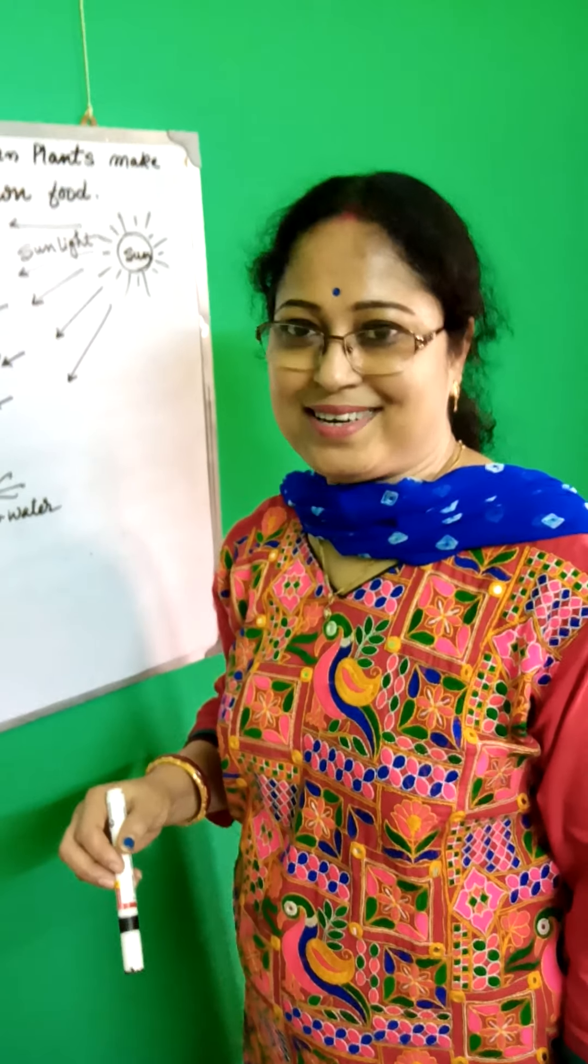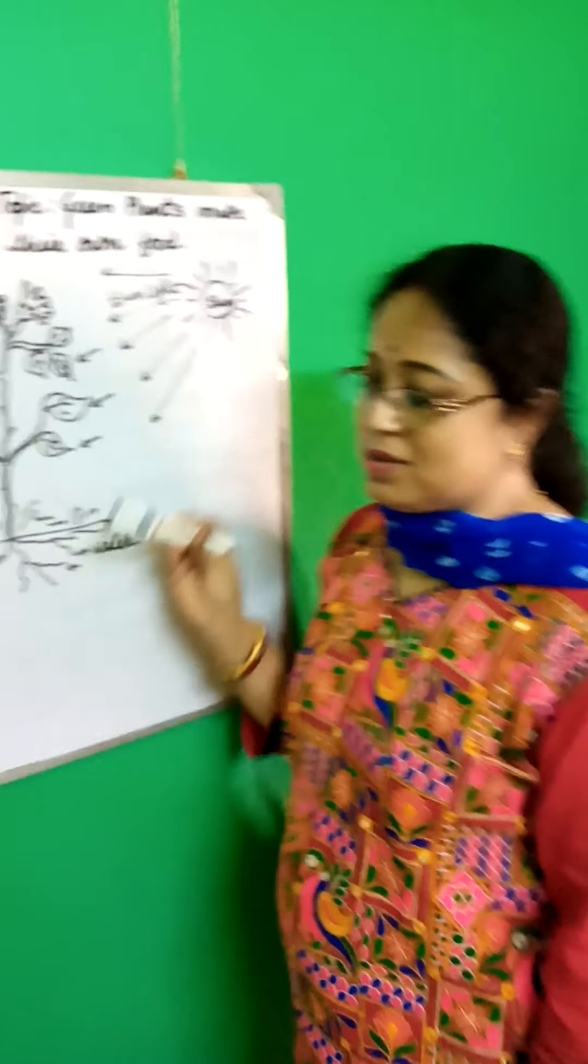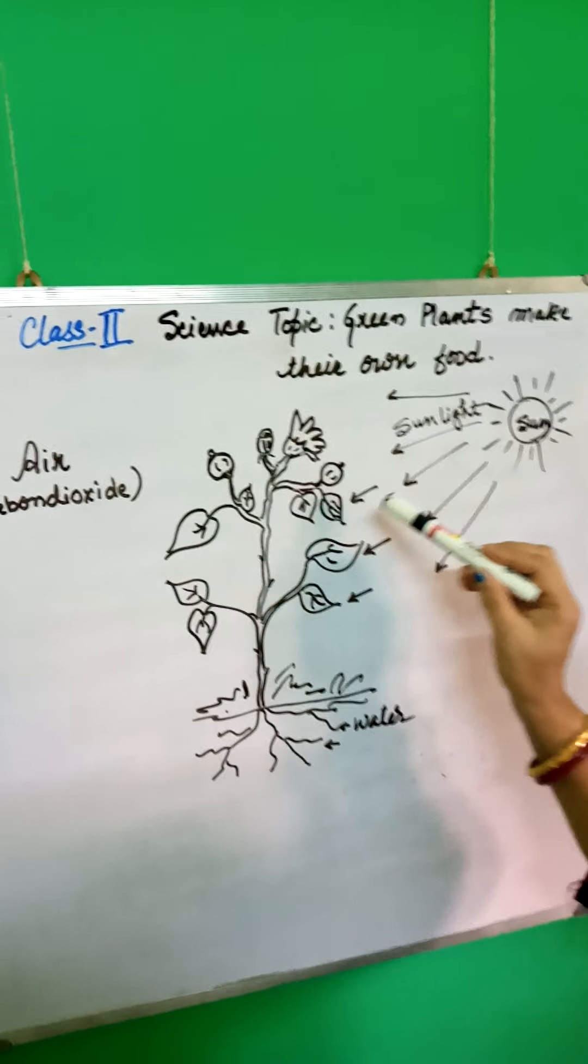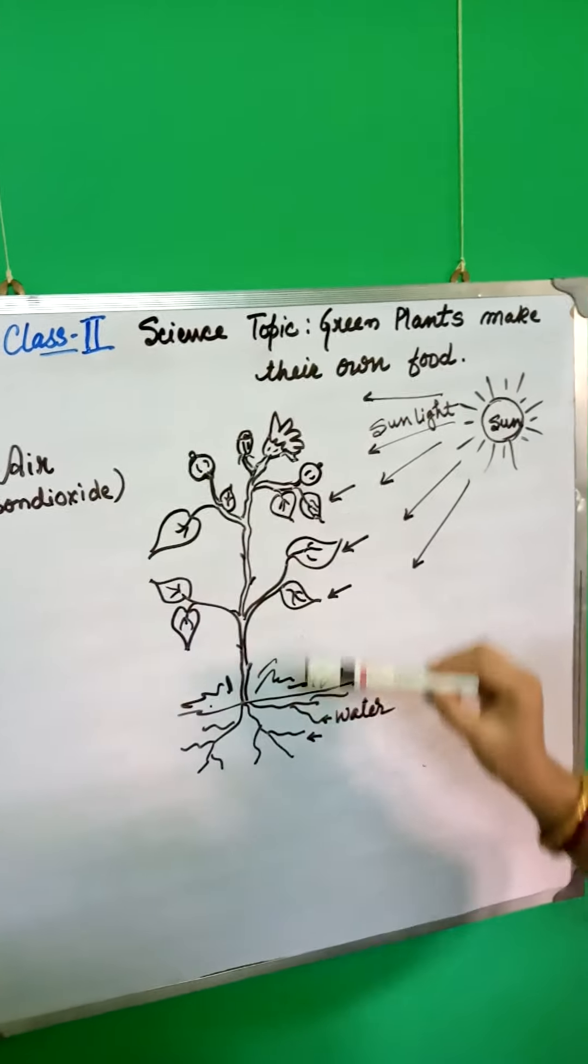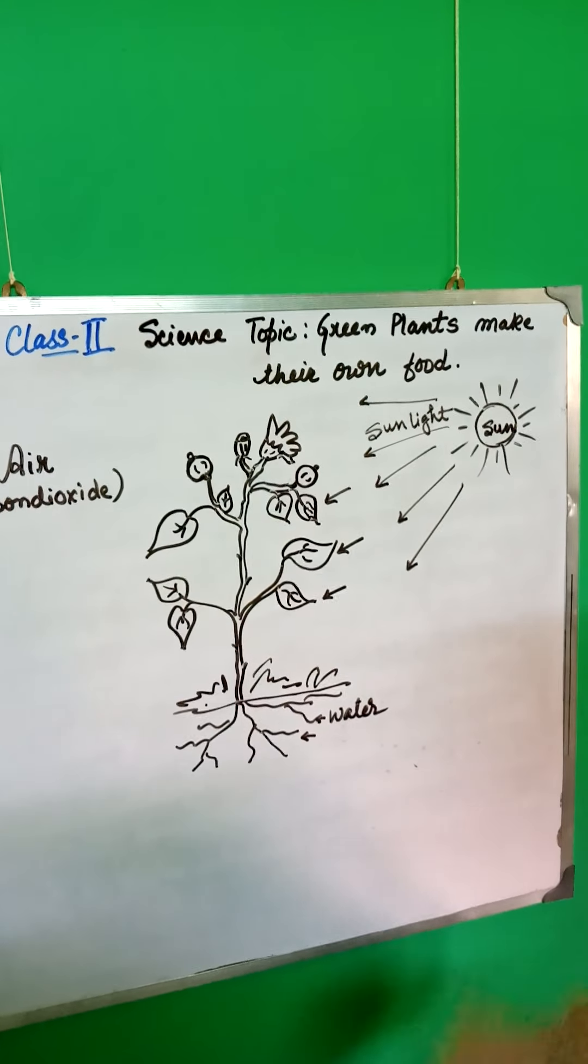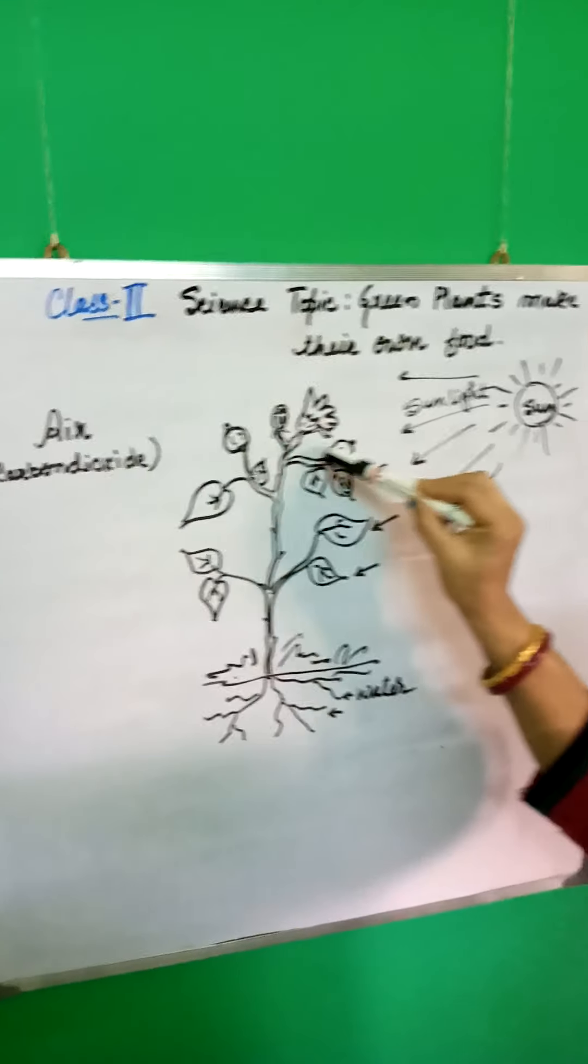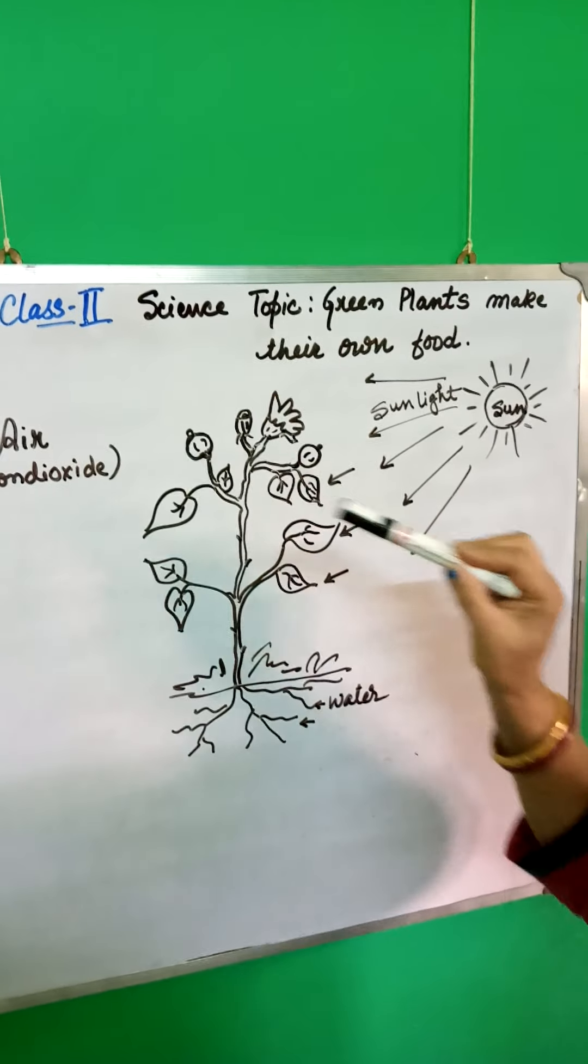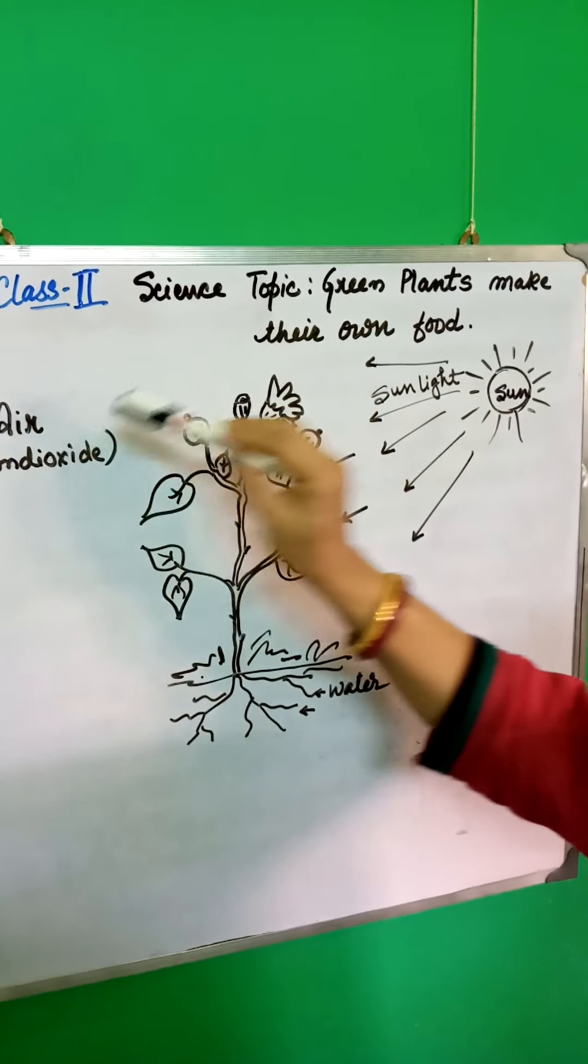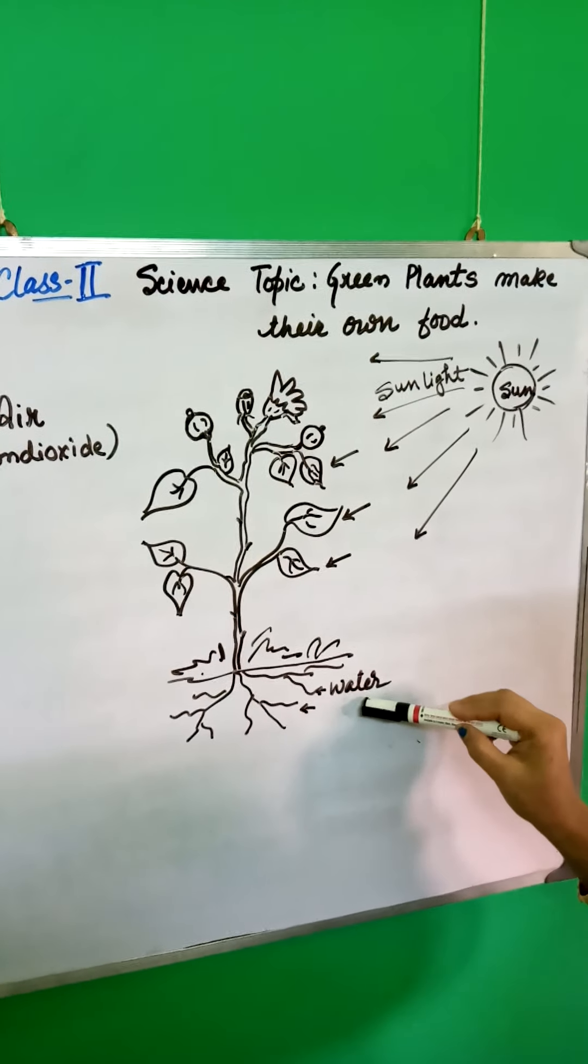Students, let us recap. Green plants need sunlight, air and water to make their own food. See, these are food. Making this food, they need sunlight, air and water.